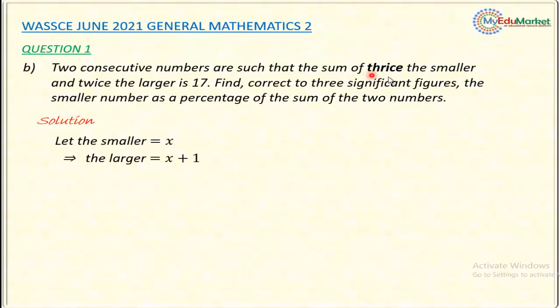The question says three times the smaller, add to twice the larger, the answer will be 17. So I'm going to use this to form an equation. 3 times the smaller, added to 2 times the larger, the answer will be 17. So I'm going to have something like this: 3x, meaning 3 times the smaller, plus 2 into x plus 1. X plus 1 is the larger, so I multiply it by 2. So these two results, it will give me 17 after adding.